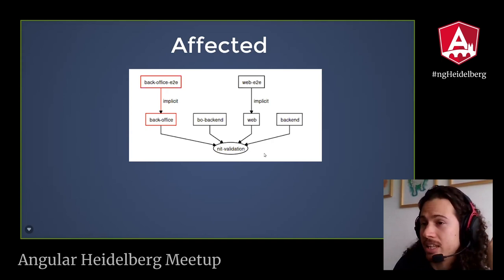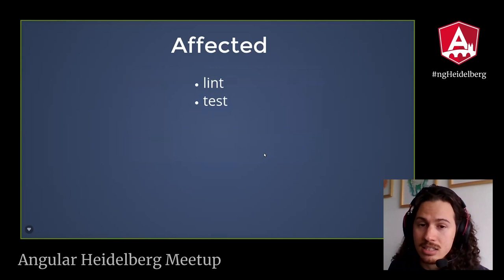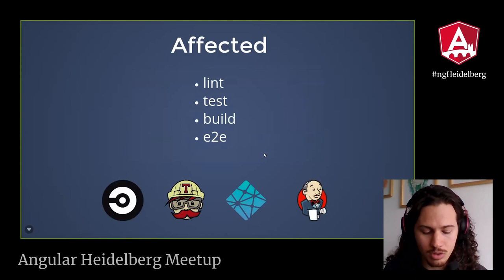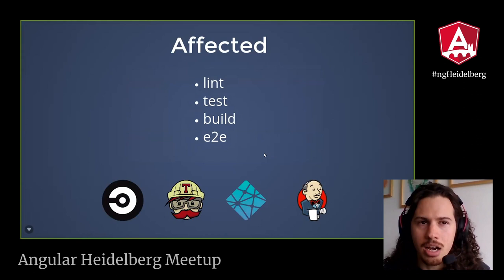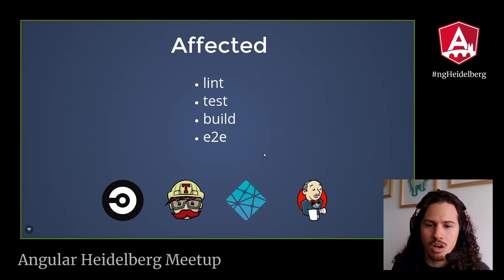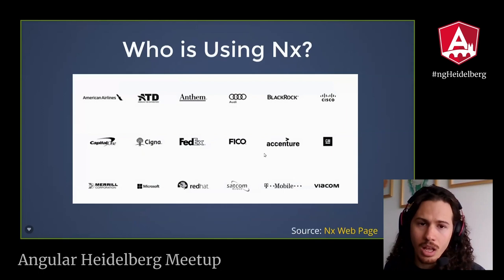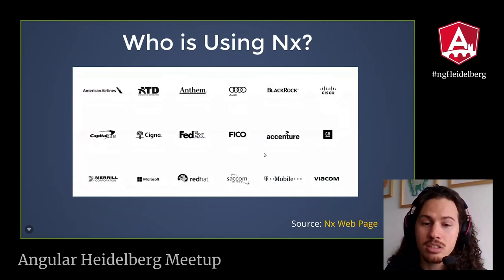For example, if we change the validation library, it is going to affect all the applications in the organization. We can run lint, tests, builds, and end-to-end tests only for the affected applications. This is a super nice feature especially for continuous integration — imagine if you change just a typo and you need to run all 23 tests and 23 builds. That is a lot of wasted time. With the affected command, we only run what is impacted. NX is being used by big companies like Audi, Cisco, FedEx, Microsoft, and Red Hat.